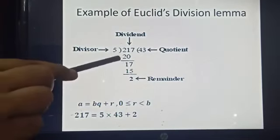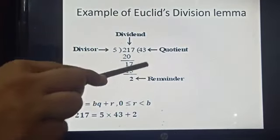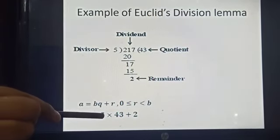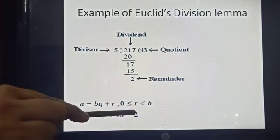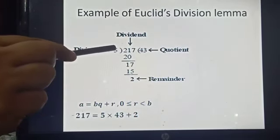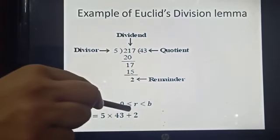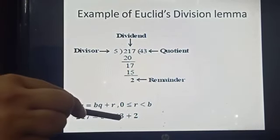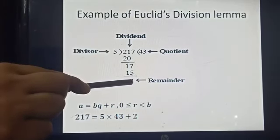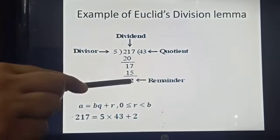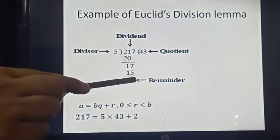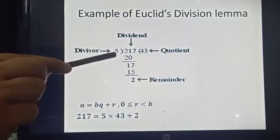So dividend is 217, divisor is 5, quotient is 43, and remainder is 2. Notice one important point: the remainder is always less than the divisor. Here the remainder is 2 and the divisor is 5, so 2 is less than 5. In all cases, the remainder is always less than the divisor.